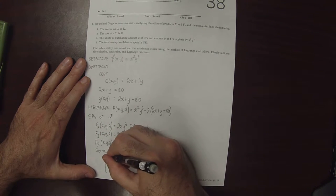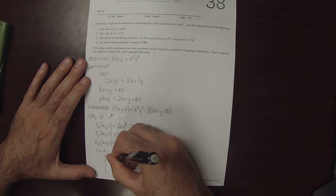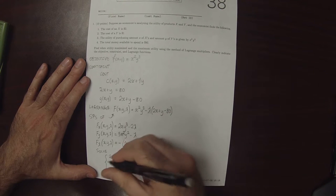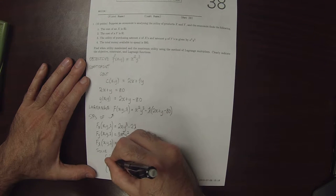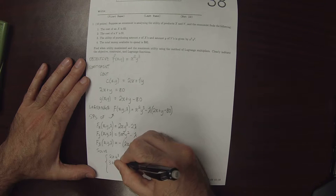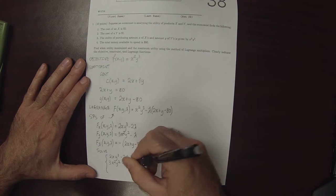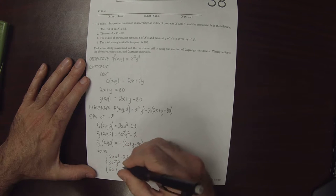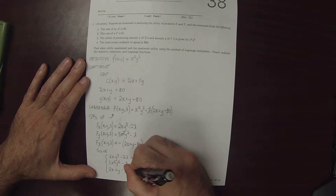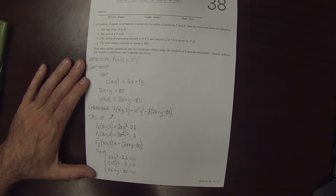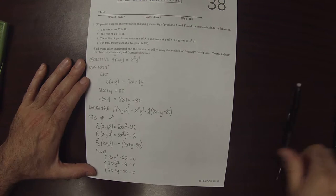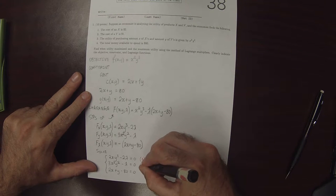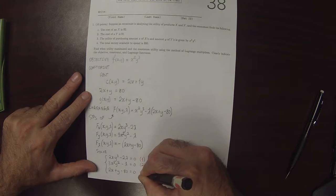Solve 2x y cubed minus 2 lambda equals zero. 3x squared y squared minus lambda equals zero. And 2x plus y minus 80 equals zero. I'll number these equations 1, 2, and 3.